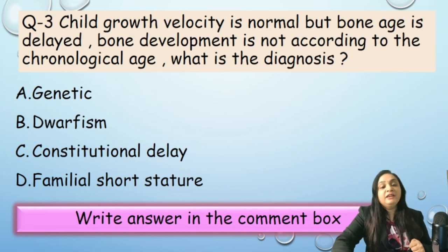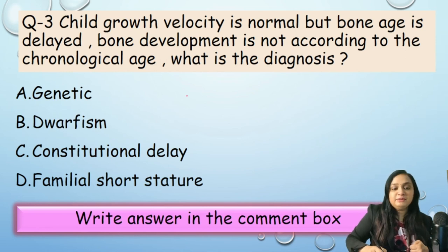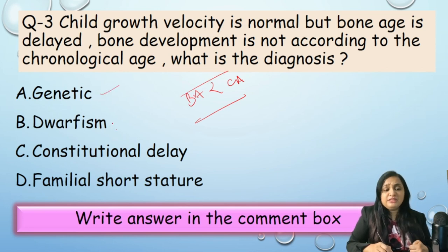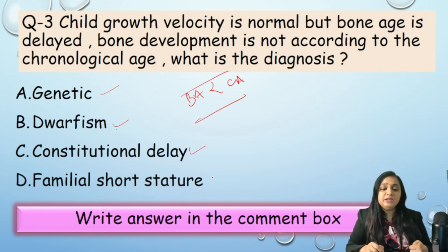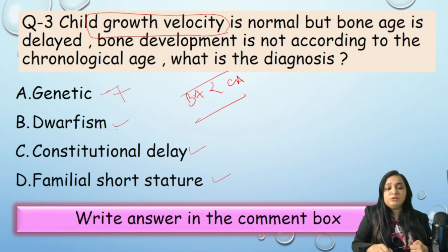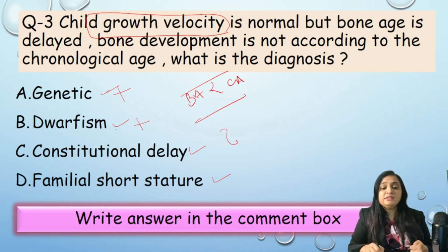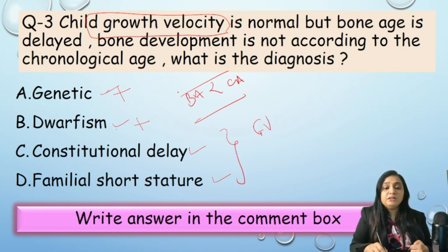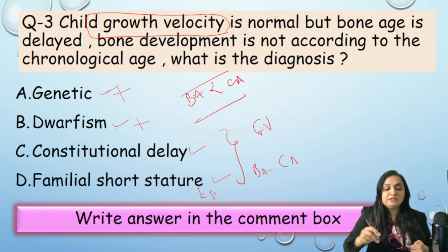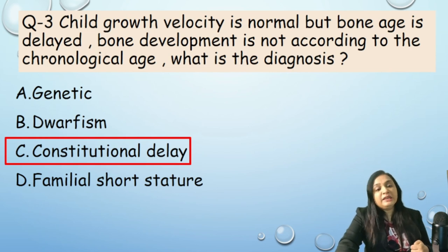Question 3: A child's growth velocity is normal but bone age is delayed (bone age is less than chronological age). What is the diagnosis? Options: A) Genetic; B) Dwarfism; C) Constitutional delay; D) FSS. In genetic causes, velocity cannot be normal; in dwarfism, velocity is also not normal. When growth velocity is normal and bone age equals chronological age, it is familial short stature. When growth velocity is normal but bone age is delayed, it is constitutional delay. Correct answer: constitutional delay.